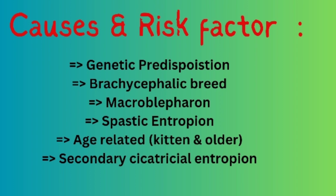Finally, there is cicatricial entropion, which results from scarring — scarring due to an eyelid wound or eyelid surgery. Any condition of the eyelid, either wounds or post-surgical scarring, can lead to cicatricial entropion in cats and dogs.